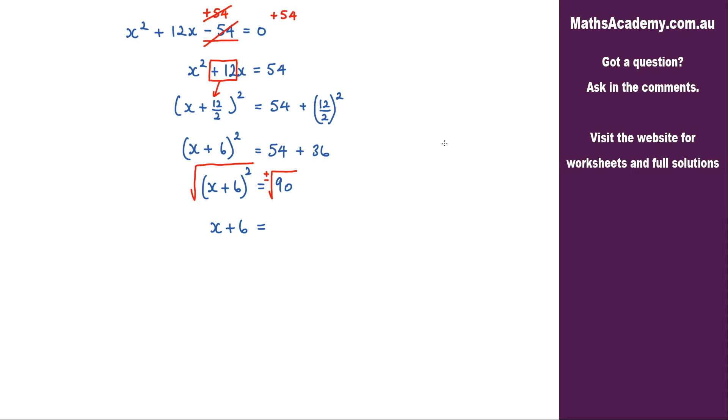Now 90, let's think about that 90. I can break that down into 9 multiplied by 10 and this 9 here is obviously a square number and the square root of 9 is 3. So what I'm going to get is plus or minus, always remember that plus or minus, 3 root 10.